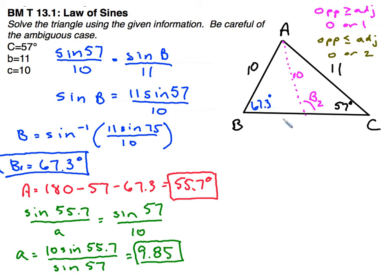Finding that is actually relatively easy because of the fact that this other triangle that's formed is an isosceles triangle. And so if this is 67.3 degrees, so is the opposite angle here, 67.3 degrees. And then I can use the fact that this angle of 67.3 and B2 add up to 180.